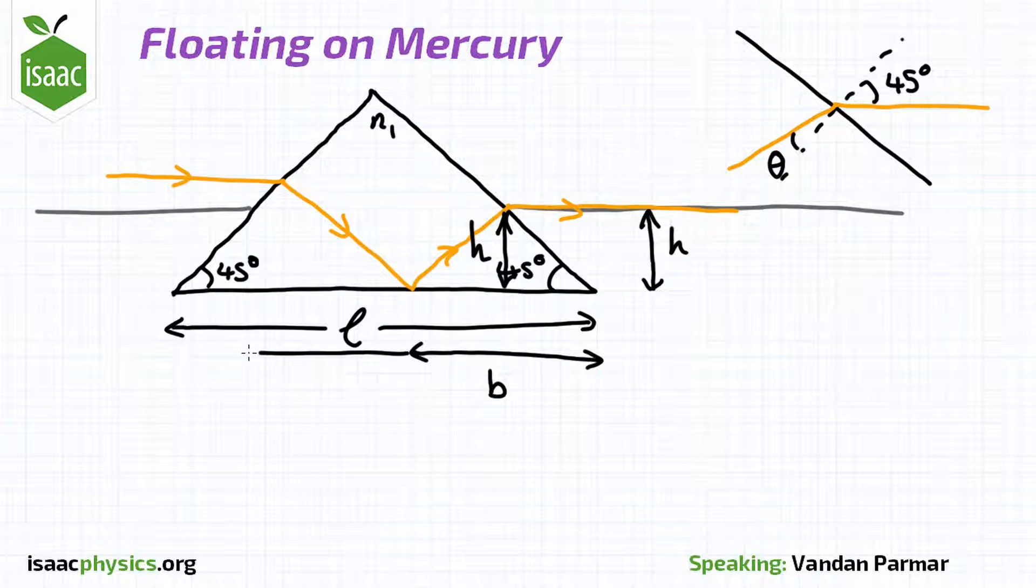This triangle must be similar to the equivalent triangle that the incoming ray makes. We can then mark on its base length L minus B and its height H plus X, and solve using our knowledge of similar triangles to find X.